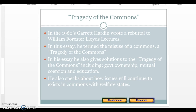Hardin discusses technical solutions such as privatization of national parks, cap and trade, mutual coercion, and the welfare state. He says we put all these tools in place but they haven't stopped the overuse of the commons. The reason, he argues, is that each technical solution needs an extension in morality — a moral component. Without it, we cannot solve the commons problem, because people need to understand how their short-term gains hurt the long-term interest of the whole world.